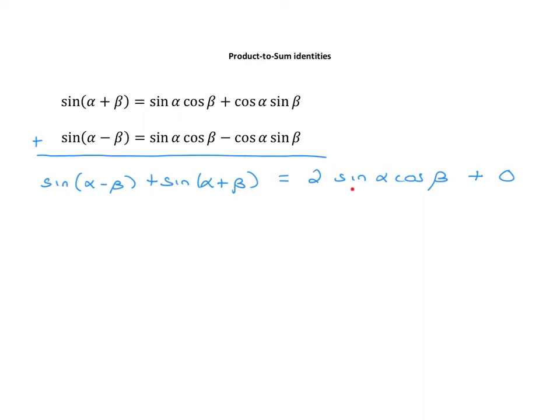This actually allows us to solve for sine alpha and cosine beta if we divide both sides by two. On one side, we'll have one half times sine of alpha minus beta plus sine of alpha plus beta. And that is equal to sine of alpha times cosine of beta.